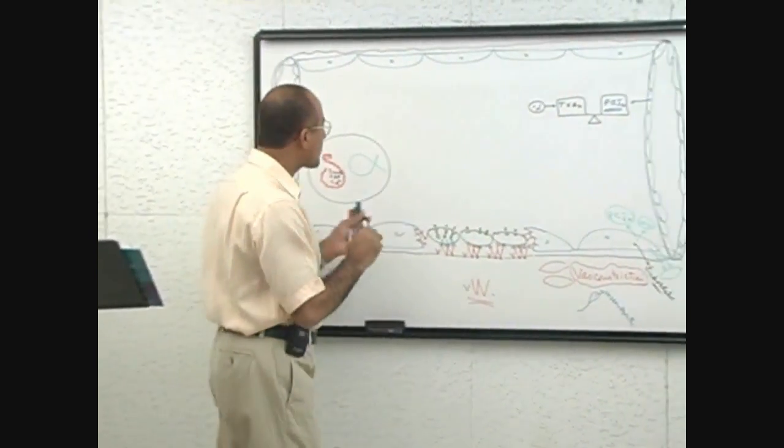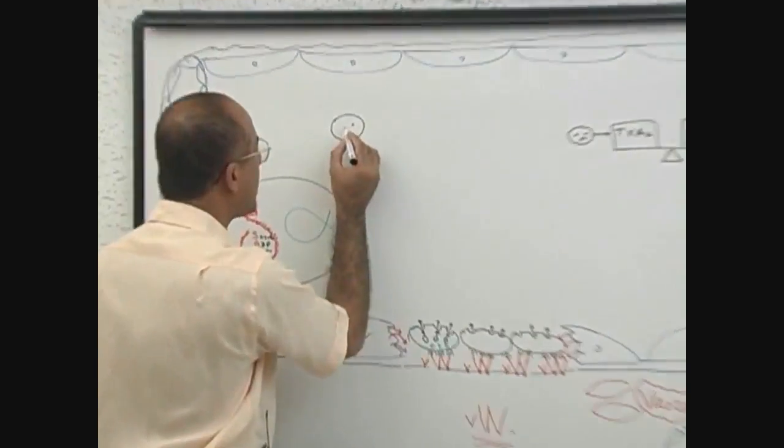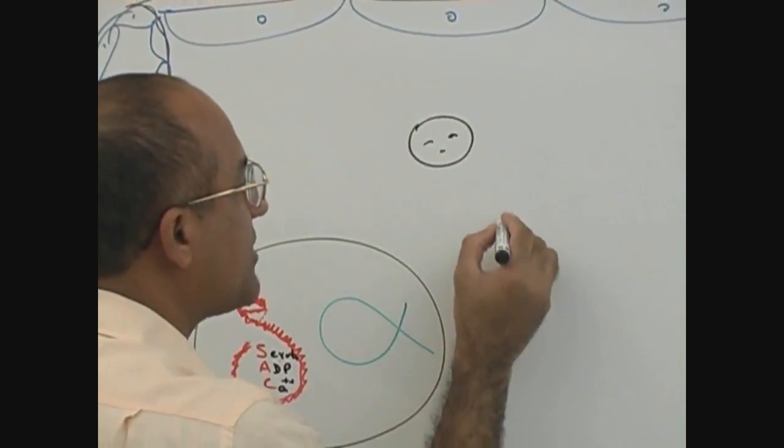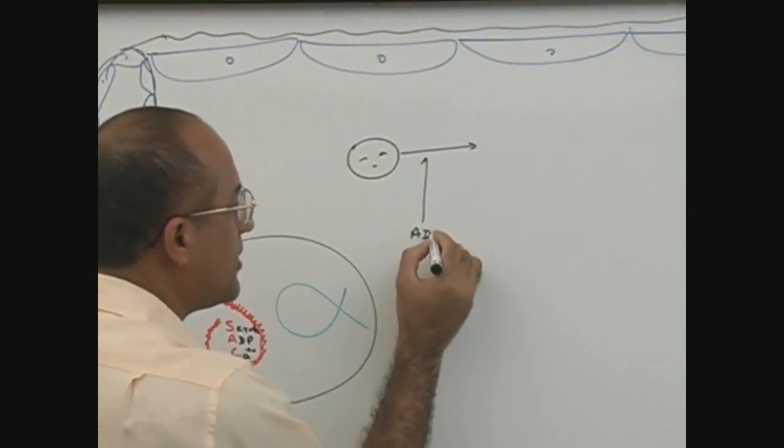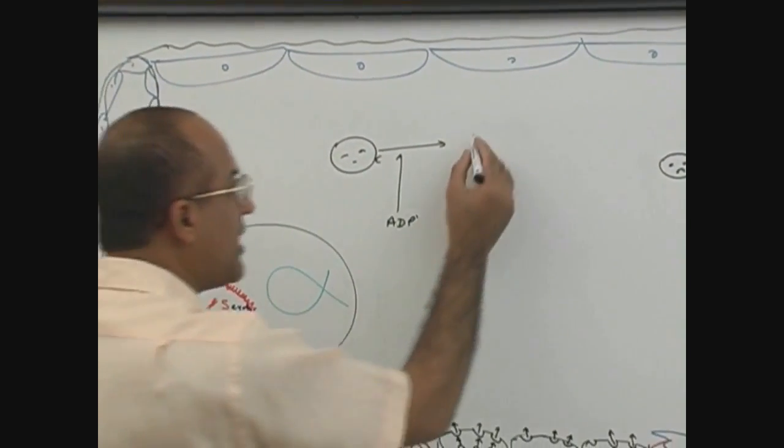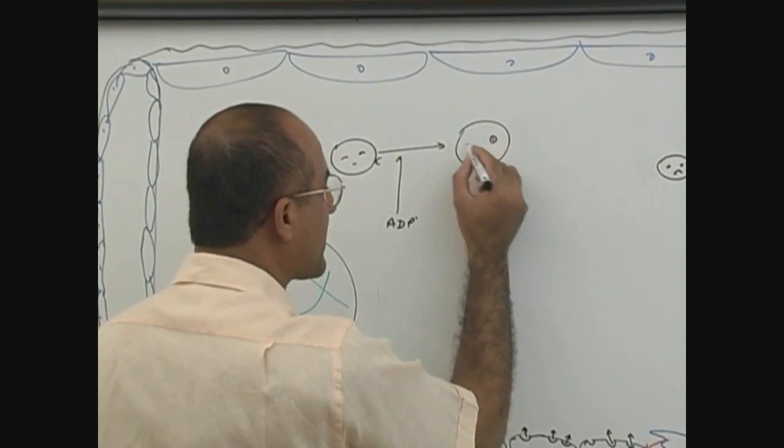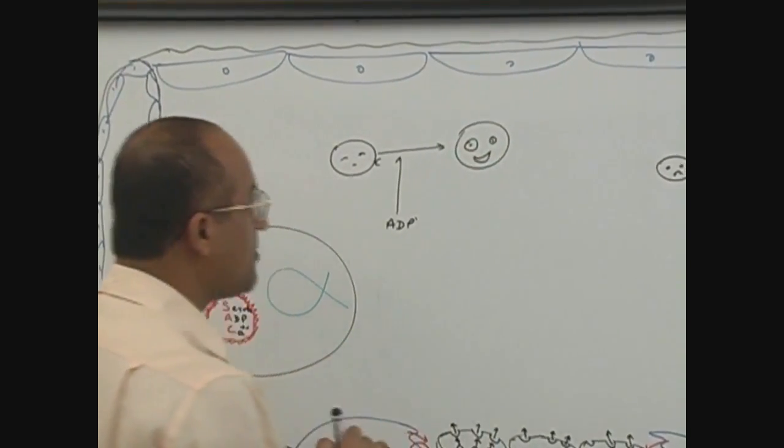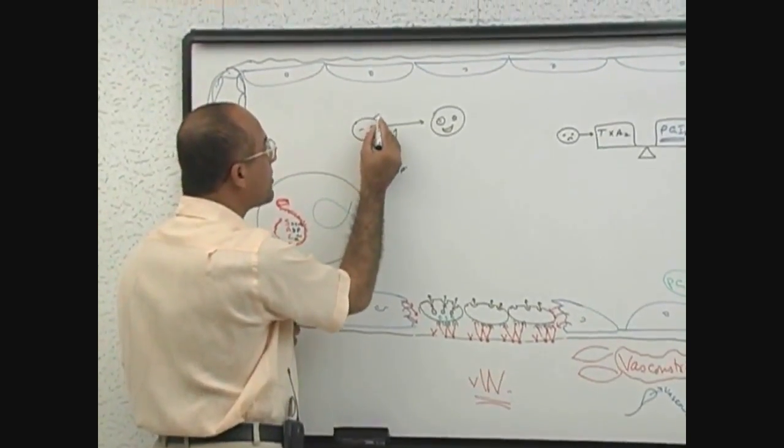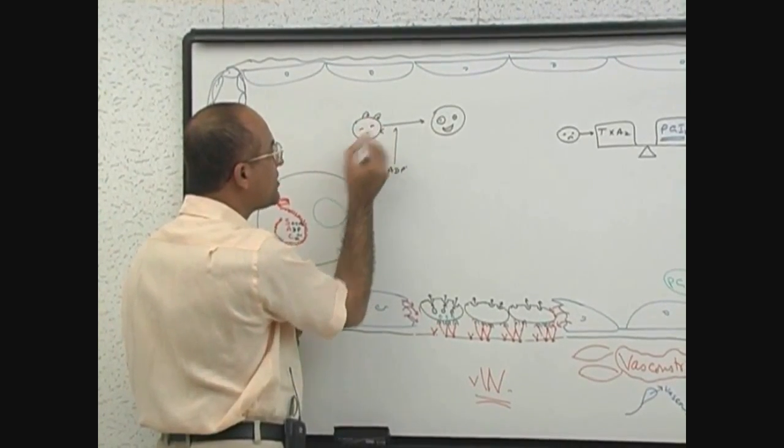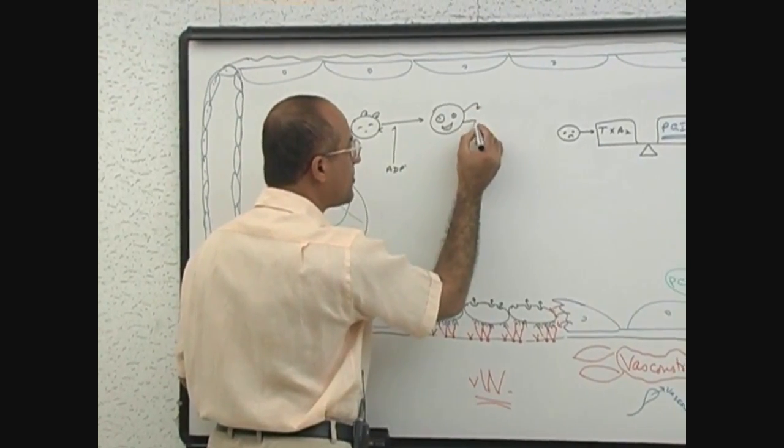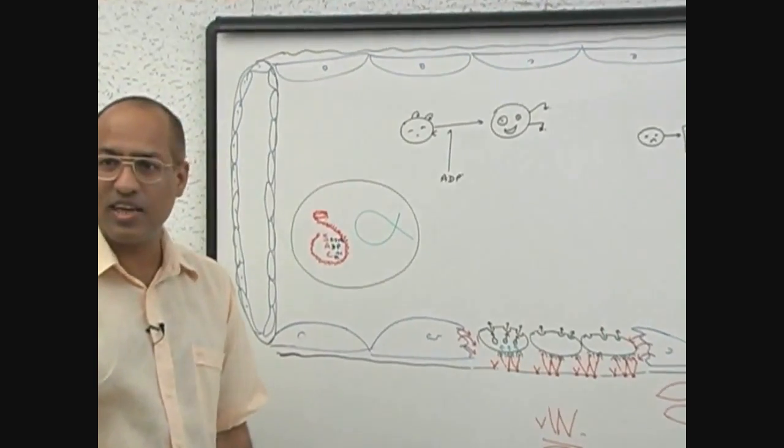Let's suppose this is a platelet and it is sleeping. But as soon as ADP touches it, there are receptors on it. As soon as this receptor is activated, this platelet becomes fully active. Platelet becomes fully active and it was having some receptors which were not working. These were receptors which were not working. Suddenly these receptors come into working state.